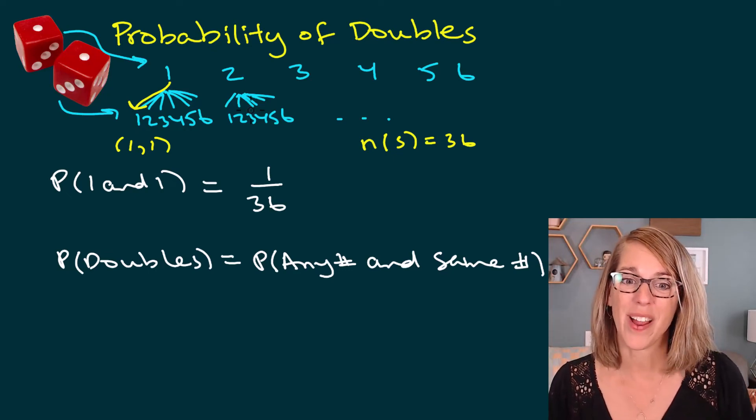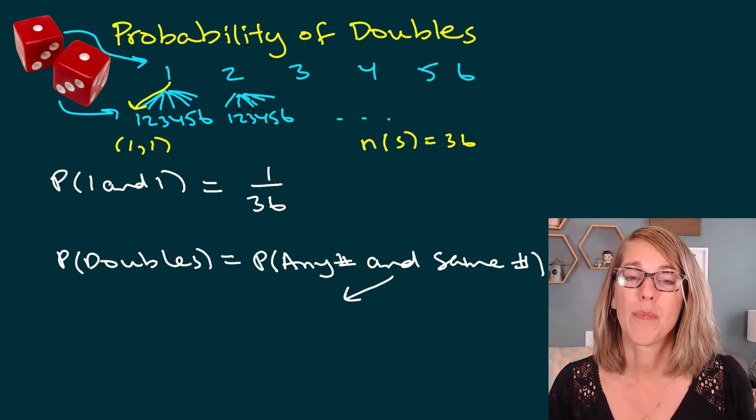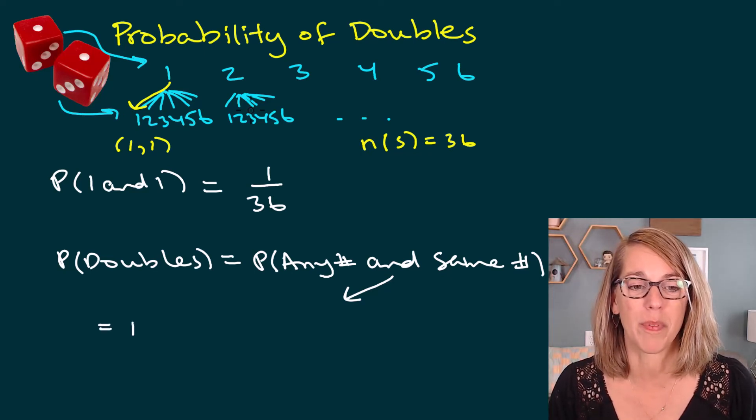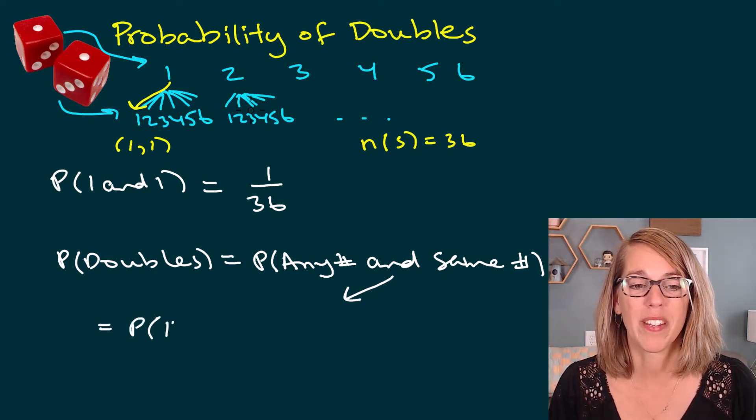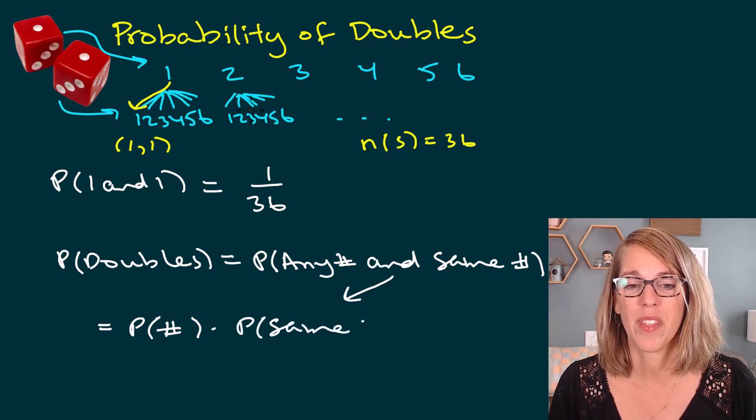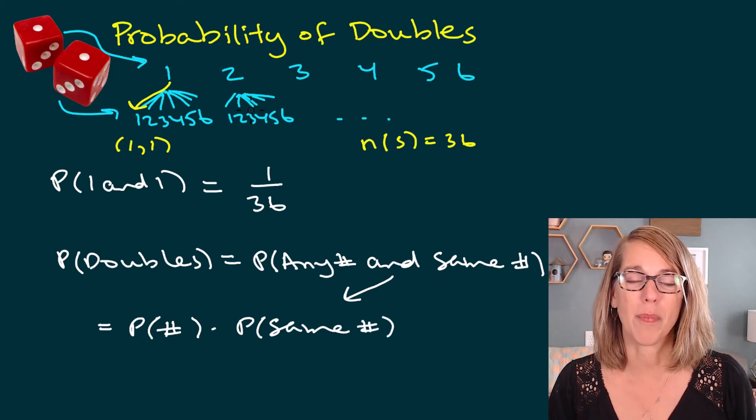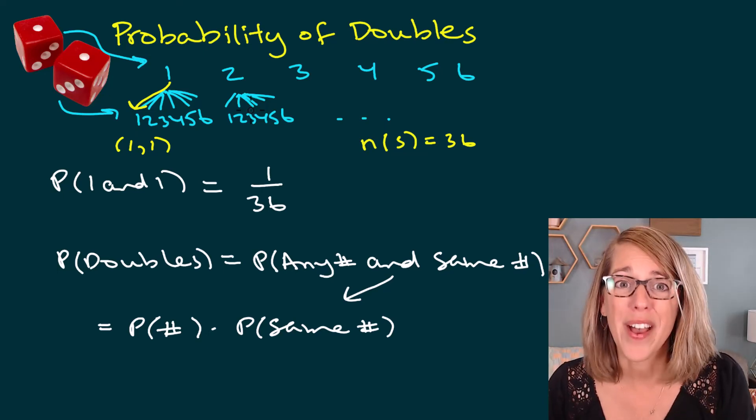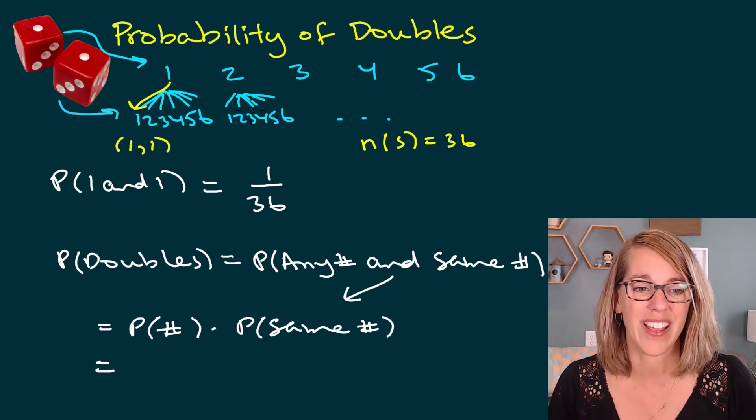As I put this together, I'm going to go ahead and use the multiplication principle. This tells me that I'm going to multiply those two probabilities together. So the probability of any number times the probability of the same number. When I put this one together, the probability of any number on that first dice, it could be any of the six out of the six. So I'm going to write that as six out of six.